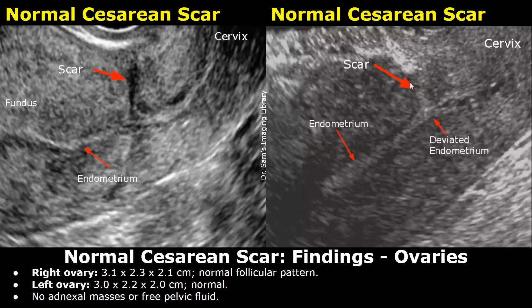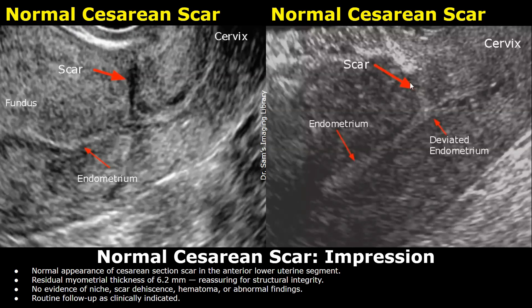The ovaries are normal in size and appearance. Right ovary measures 3.1 x 2.3 x 2.1 cm with normal follicular pattern. Left ovary is also normal. No adnexal masses or free pelvic fluid. Impression: normal appearance of cesarean section scar in the anterior lower uterine segment. Residual myometrial thickness of 6.2 mm, reassuring for structural integrity. No evidence of niche, scar dehiscence, or abnormal findings. Routine follow-up as clinically indicated.